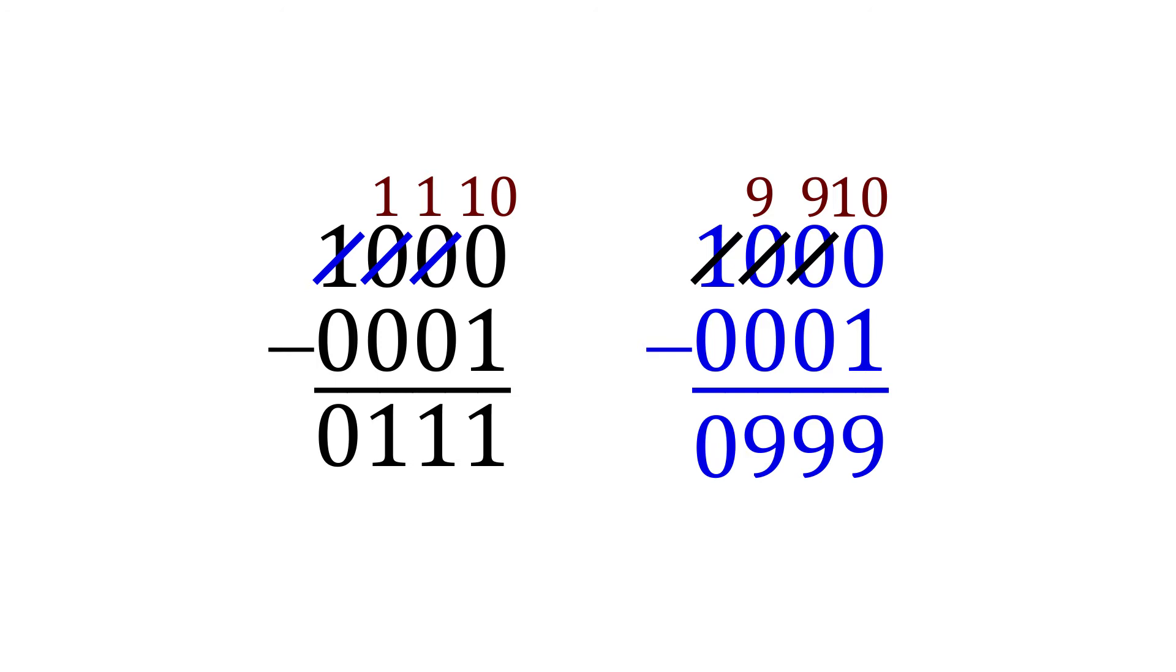When repeated borrowing is involved in binary subtraction, drop a 1 at each 0 you pass over, just like you would drop a 9 at every 0 you pass over in decimal subtraction. That does it for subtraction, so let's move on to multiplication.